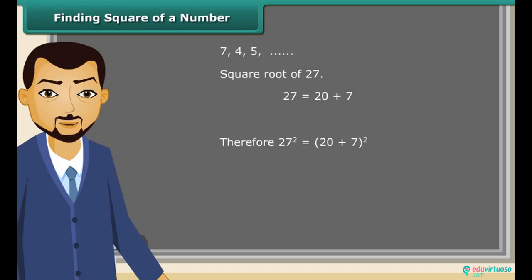Therefore, the square of 27 equals (20 plus 7) whole square, which equals 20 into 20 plus 7 plus 7 into 20 plus 7, equals 20 square plus 20 into 7 plus 7 into 20 plus 7 square, equals 400 plus 140 plus 140 plus 49, which equals 729.